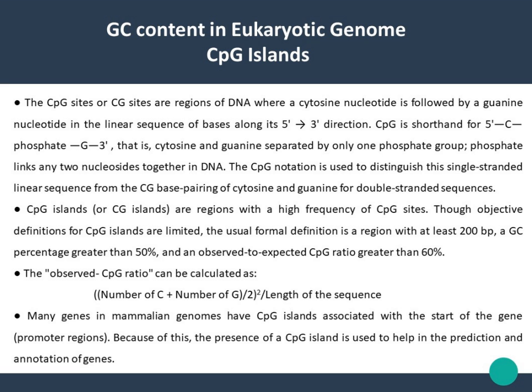CpG sites or CG sites are regions of DNA where a cytosine nucleotide is followed by a guanine nucleotide in the linear sequence of bases along its 5' to 3' direction. CpG is shorthand for 5'-C-phosphate-G-3', that is cytosine and guanine separated by only one phosphate group. CpG notation is used to distinguish this single-stranded linear sequence from the C-G base pairing of cytosine and guanine in double-stranded sequences.